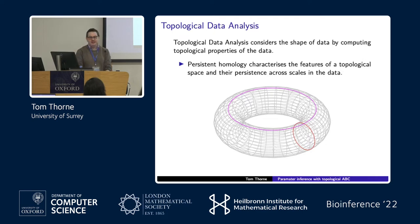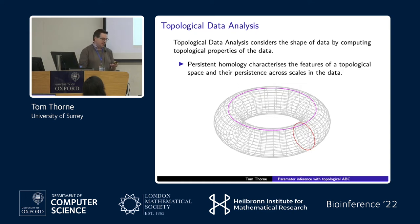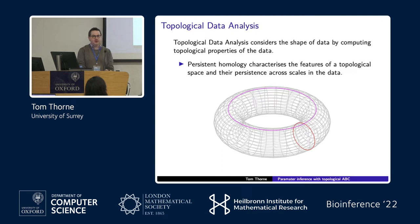Topological data analysis basically considers the shape of the data by computing topological properties, and one particular kind — almost synonymous with TDA — is something called persistent homology. This characterizes the features of a topological space and their persistence across scales. We use homology to characterize topological features: for example, for a torus in dimension zero we have one connected component; in dimension one we have two loops; and in dimension two, if the torus is hollow, we have a void — giving one element of the homology group in each corresponding dimension.